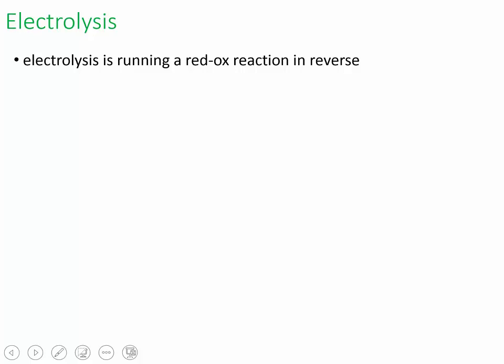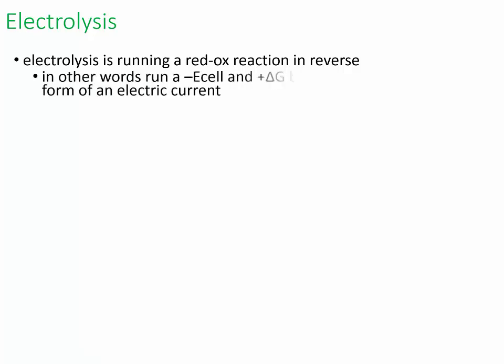This video will be covering electrolysis. Electrolysis is running a redox reaction in reverse — you're taking a negative E cell process, one that doesn't happen spontaneously, so your delta G ends up being positive.